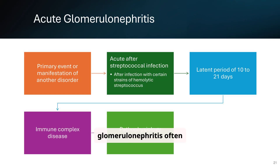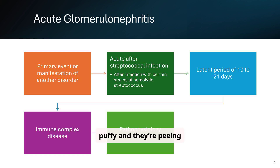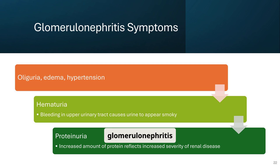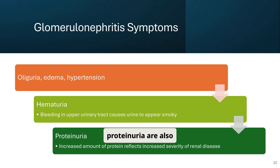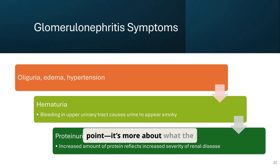Acute glomerulonephritis often follows a streptococcal infection, with a latent period before symptoms manifest. Imagine a kid who has strep throat, doesn't finish antibiotics, and then a couple weeks later has a puffy face and is peeing coke-colored urine — that's glomerulonephritis. The immune system gets overexcited and attacks the glomeruli. Key symptoms include oliguria, edema, hypertension, hematuria causing smoky-colored urine, and proteinuria. The urine may appear smoky or tea-colored due to blood. Puffy face indicates edema. Headache could be due to high blood pressure.